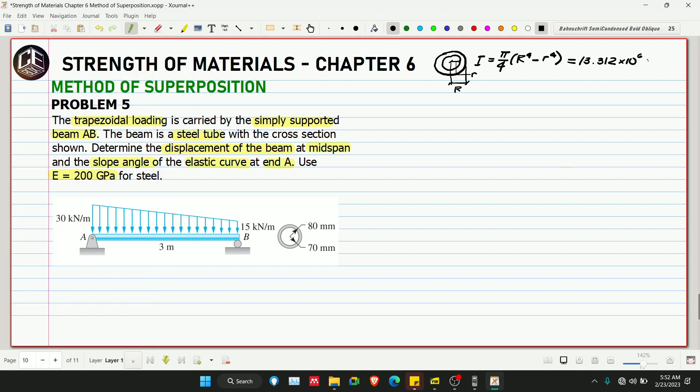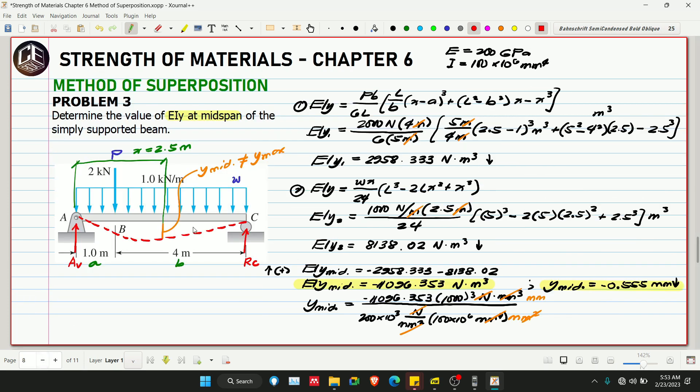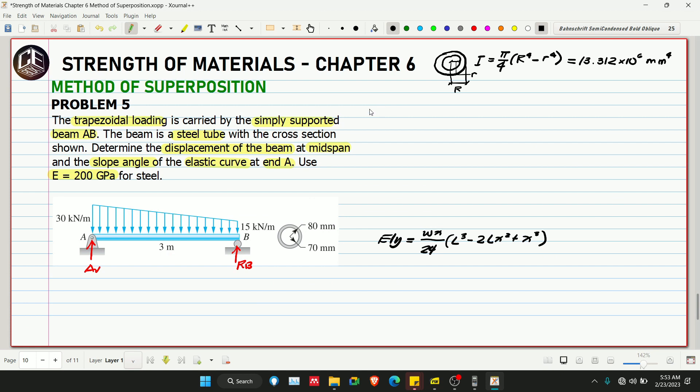So we now have our moment of inertia. Now we need the support reactions at A and B. The displacement at midspan is what we need to find. We'll solve this like we did in problem number 3. The trapezoidal load is divided into two parts: rectangular distributed load and triangular distributed load.